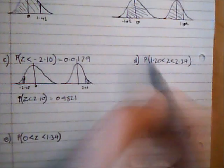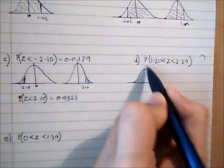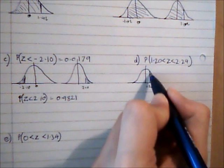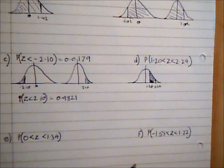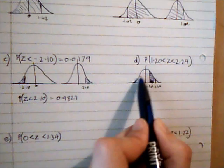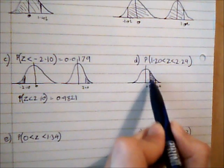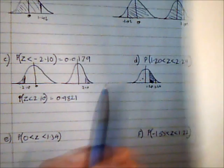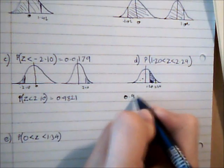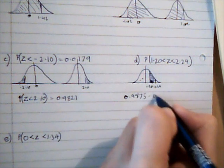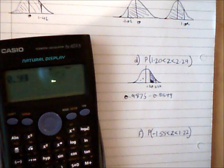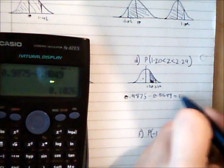The next question asks for the probability that Z is between 1.20 and 2.24. On a sketch, I want the area between these two values. Looking up 2.24 gives 0.9875, and looking up 1.20 gives 0.8849. The area between them is the difference: 0.9875 − 0.8849 = 0.1026.